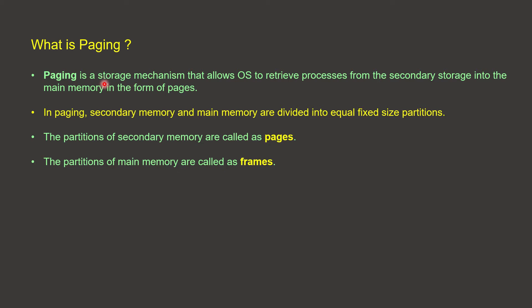We are going to execute the processes in secondary memory. We are going to allocate the primary memory — there are two types: contiguous memory allocation and non-contiguous memory allocation. In contiguous memory allocation, we allocate the process in the same location. In non-contiguous memory allocation, we divide the process and store it in different locations.